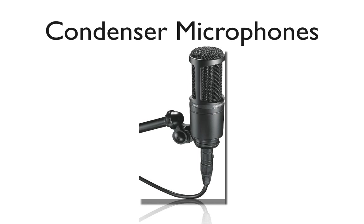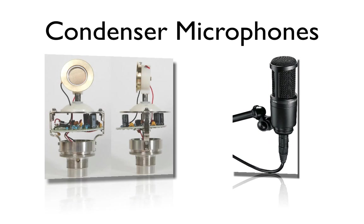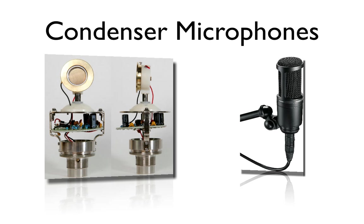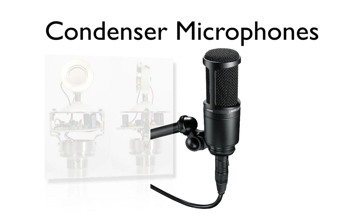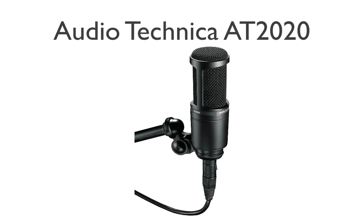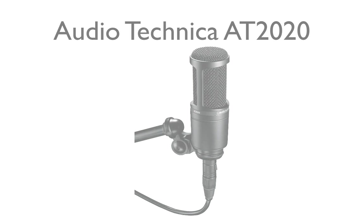Let's go ahead and talk about the condenser microphone. The condenser microphone has a diaphragm separated by carbon that acts as a capacitor. A capacitor is a thing that stores electric energy. The condenser microphone stores and releases the electronic signals when the diaphragm vibrates. A common microphone model that you might recognize is the Audio-Technica AT-2020 condenser microphone.